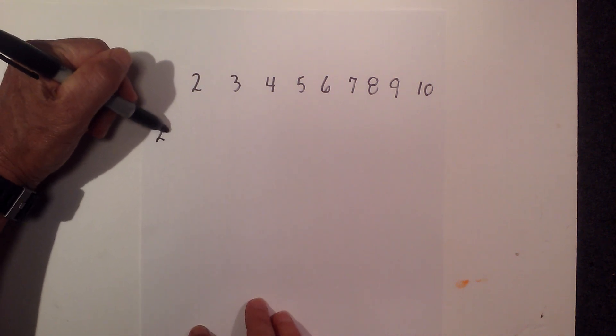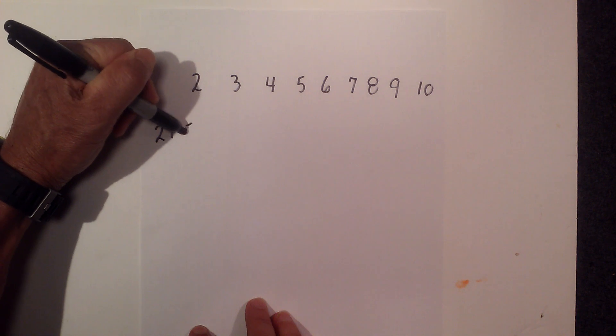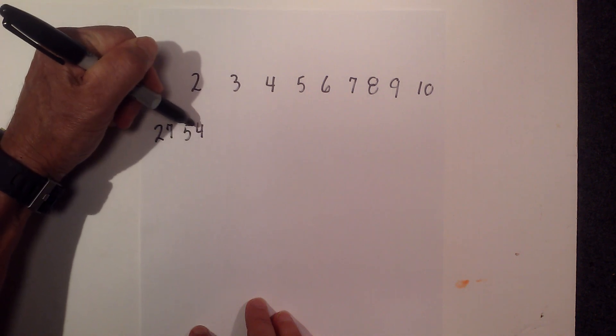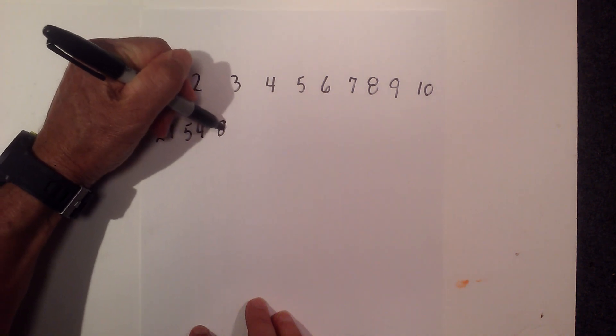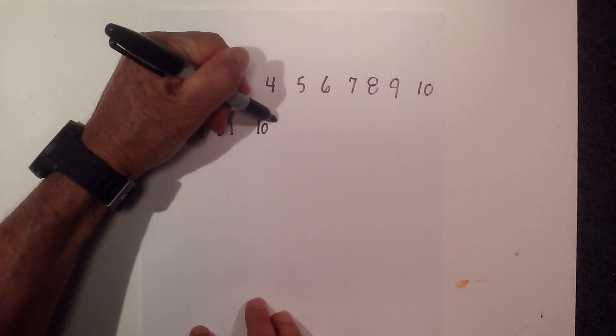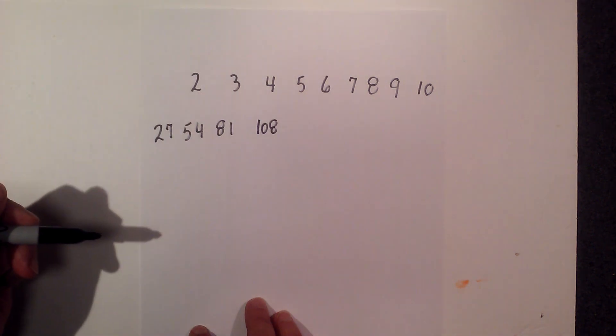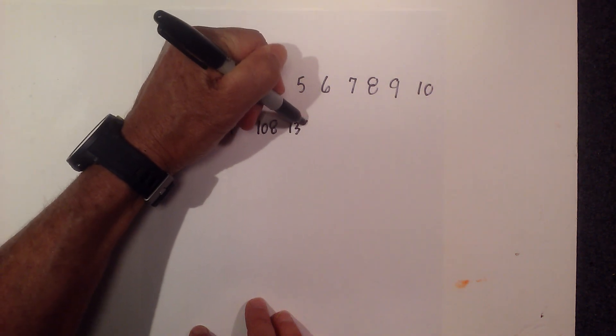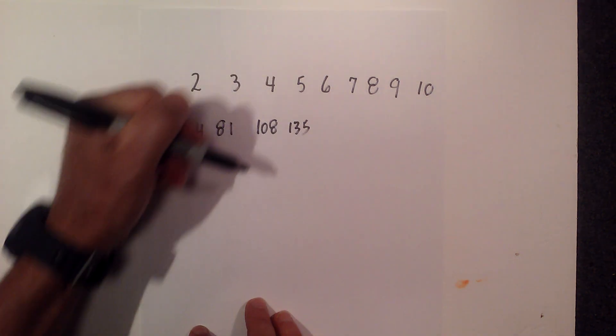27 times 1 obviously is 27, times 2 is 54, then 81, then 108. So 27 times 4 is 108. Then 135. 27 times 5 is 135.